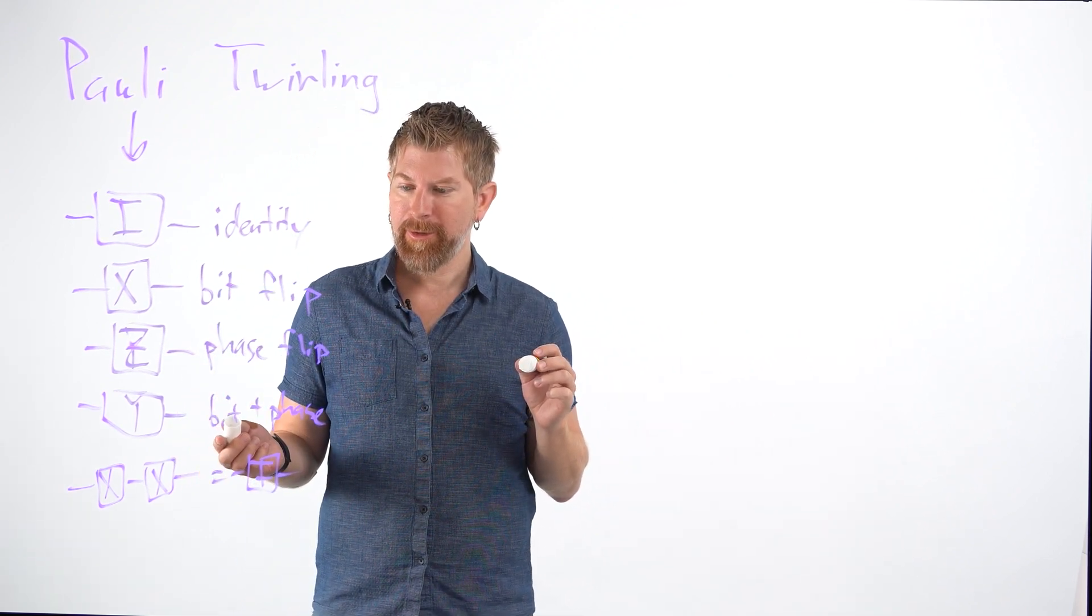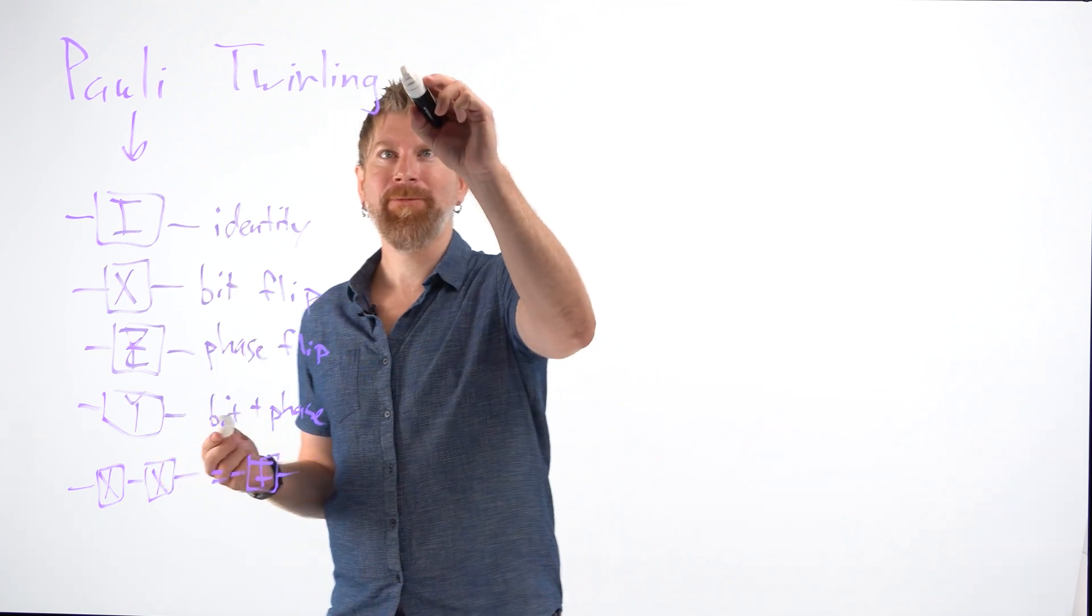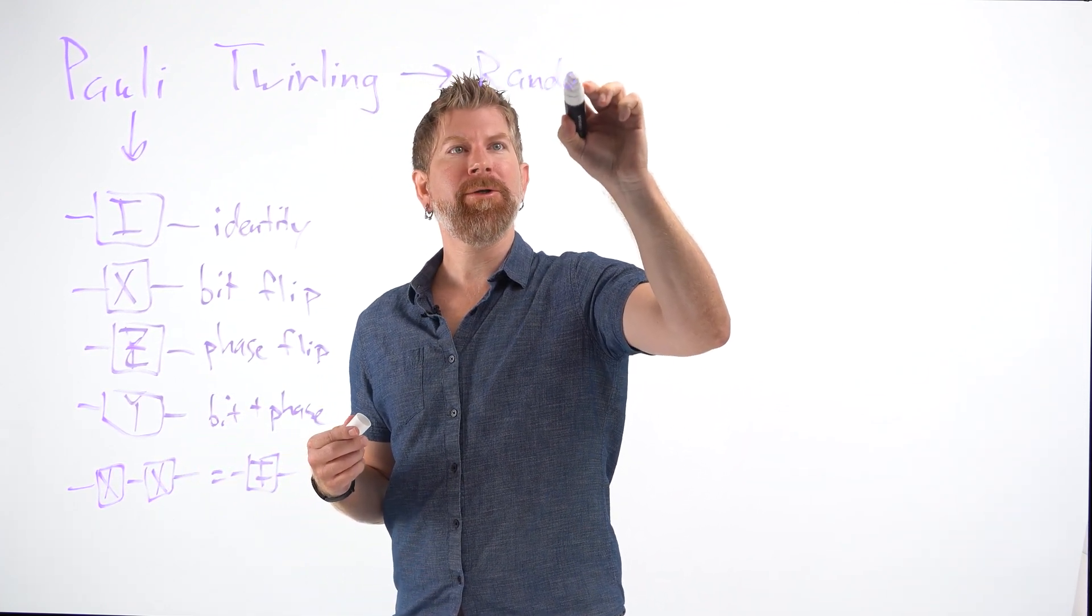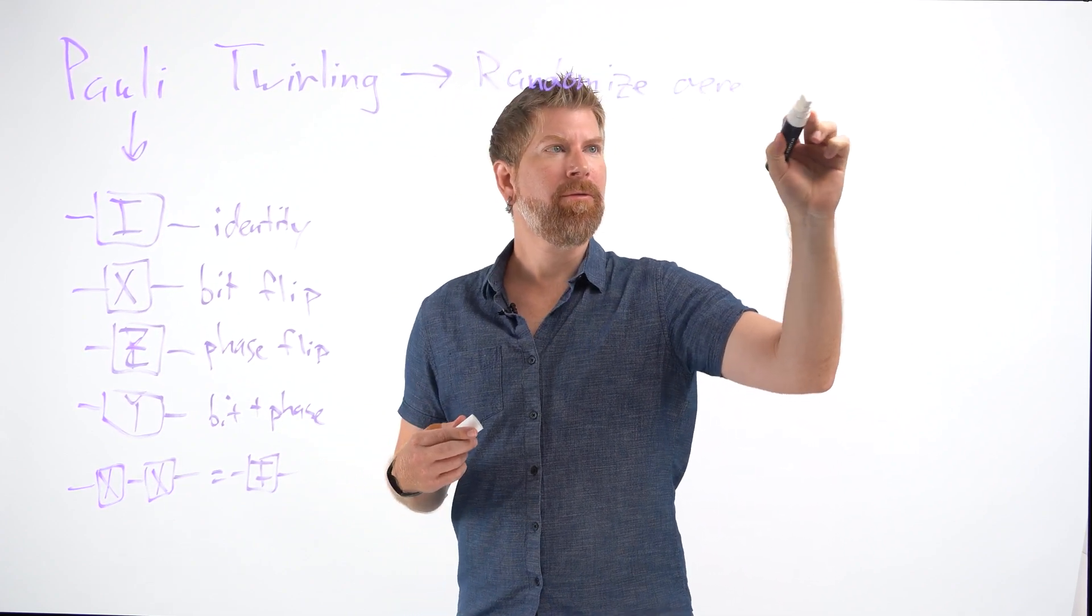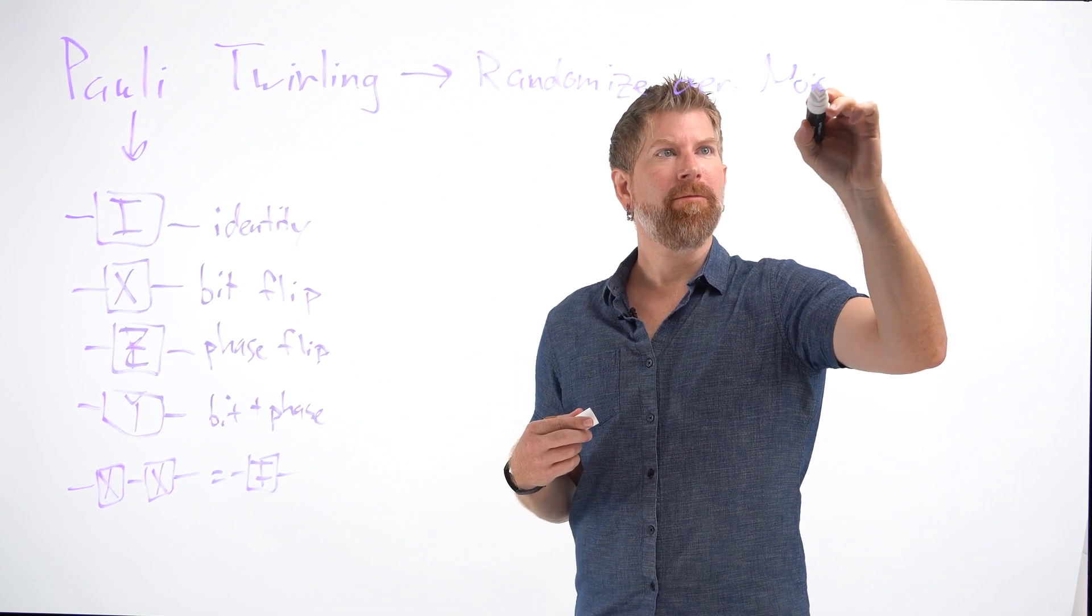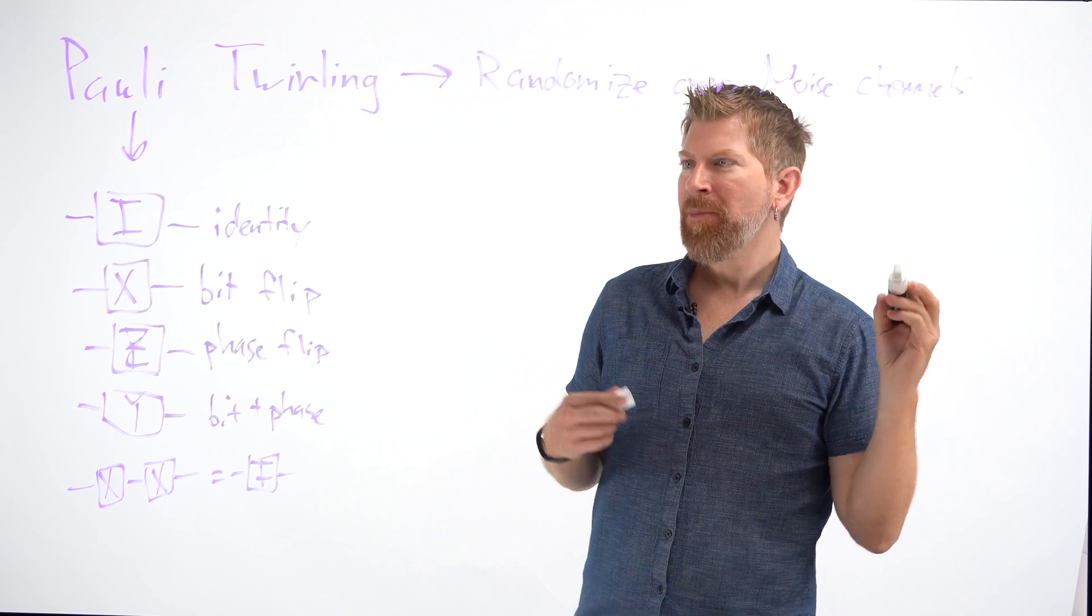And we're going to use this property because we can do something called twirling, which basically means we randomize over noise channels. Okay, so what does that mean?